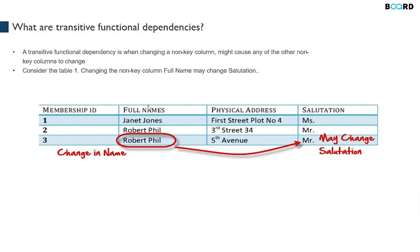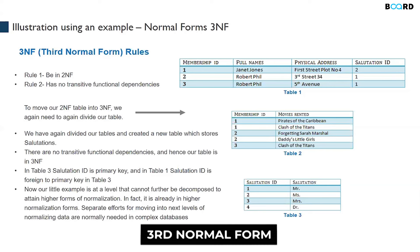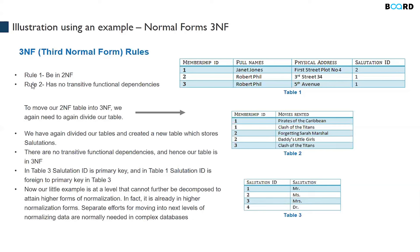For a table to be in third normal form, the first rule is it must already be in second normal form. The second rule is it should not have transitive functional dependencies — one column cannot be dependent on another non-key column. So instead of putting the salutation directly, we use a salutation ID. If Robert Phil's salutation ID is 1 he is a Mr.; if it changes to 4 he is a Dr. Table one now has no transitive functional dependencies, so it is in the third normal form.